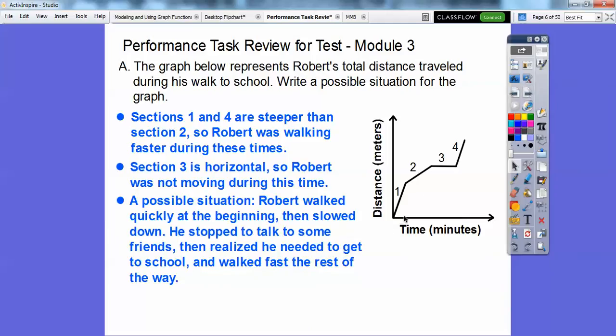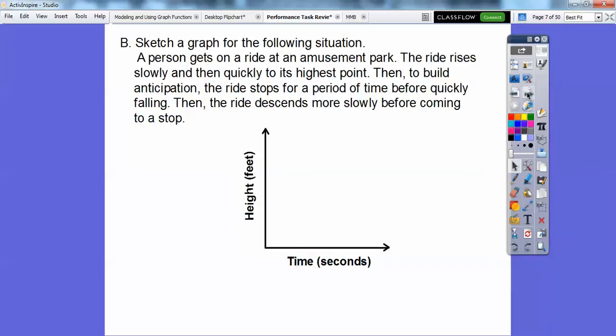So Robert walked quickly at the beginning. That would be right here. Then he slowed down. That would be this guy right there. He stopped and talked to some friends right here and then he realized he was going to get late, so he started walking fast the rest of the way to school so he wouldn't be tardy.